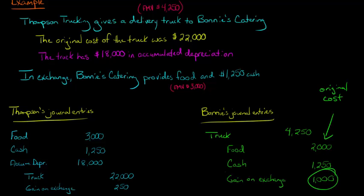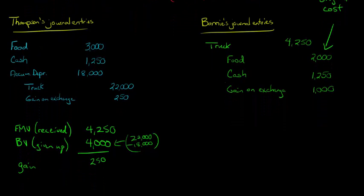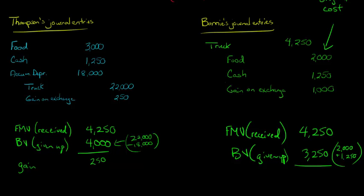If you also want to think about it intuitively, just like we did with Thompson — what was the fair market value of what was received for Bonnie? It was $4,250. And then the book value of what she gave up was $3,250, which is just the $2,000 food cost plus the $1,250 cash. So we take the $4,250 and subtract the book value given up of $3,250, and we have a $1,000 gain.